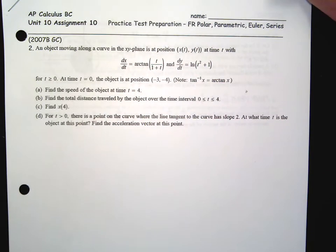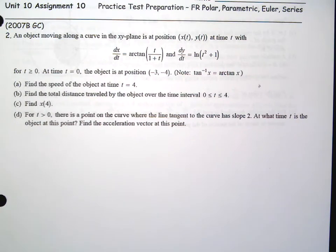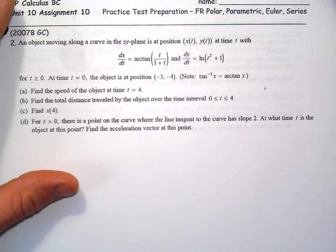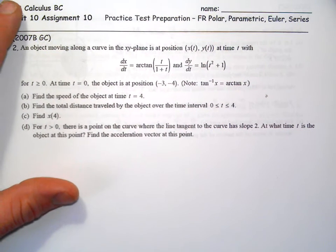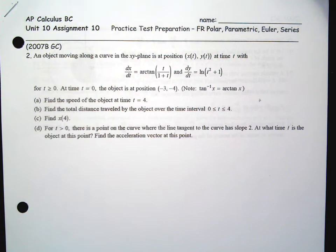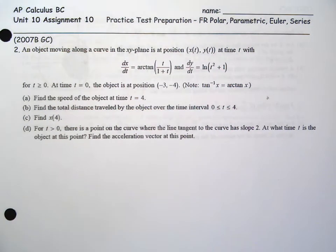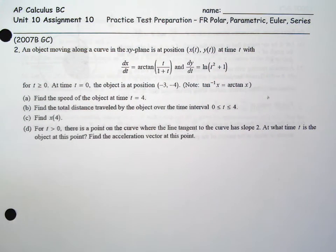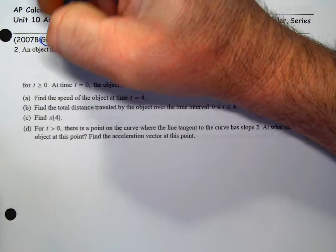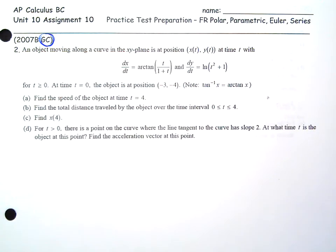BC, assignment 10, unit 10. This is a free response assignment — it's our last BC-specific assignment. Get ready for the practice test and AP test. This has a bunch of good BC-specific free response questions on it. It says GC, and that's a graphing calculator.